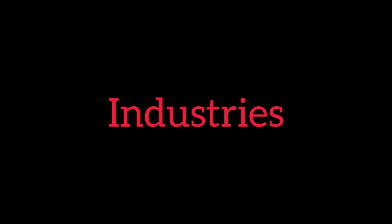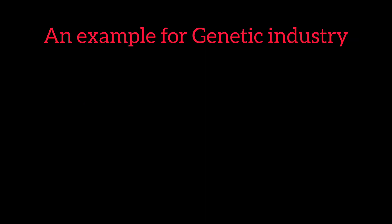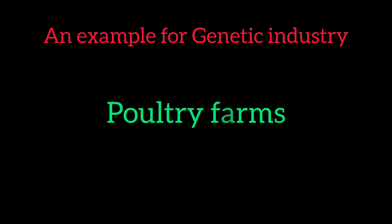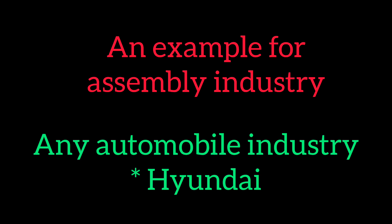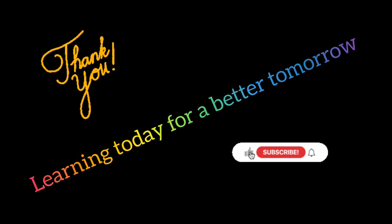This is the overview of industries. An example of analytical industry is the petroleum industry. An example of genetic industry is poultry farms. An example of manufacturing industry is a pharma company. An example of assembly industry is Hyundai car company. Thank you, my dear students. Learning today for a better tomorrow.